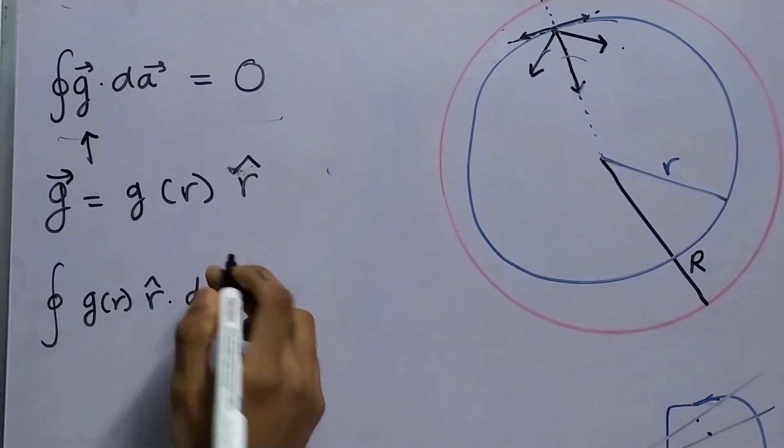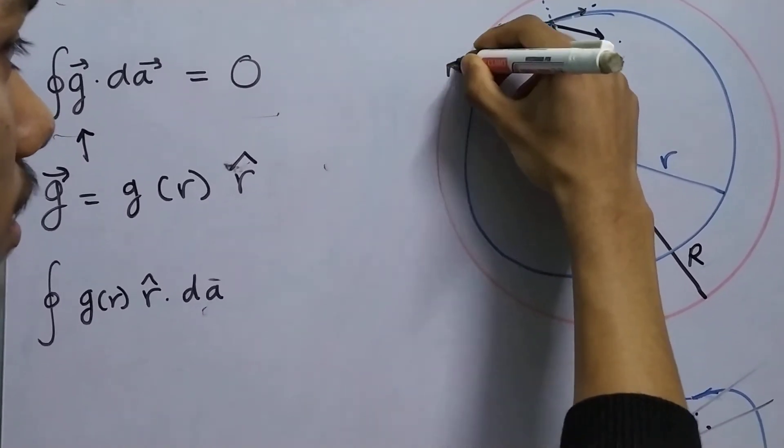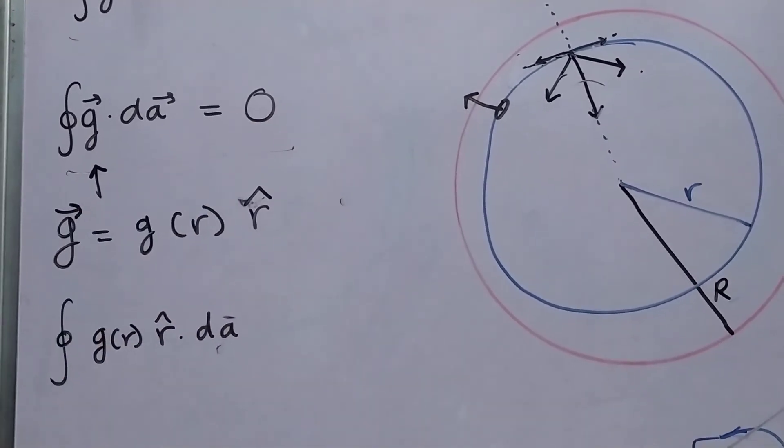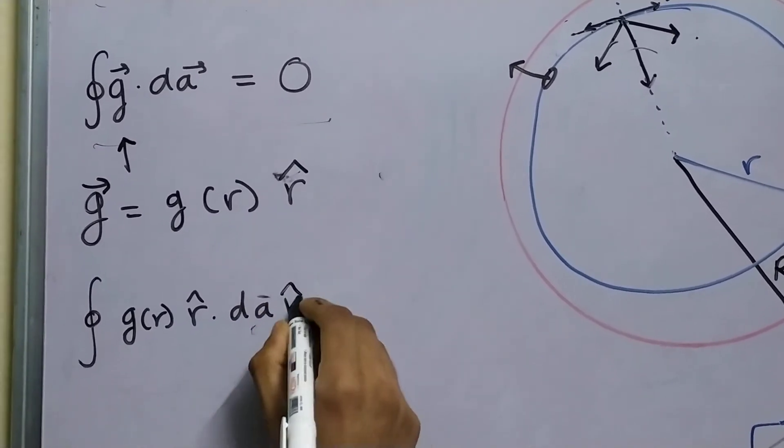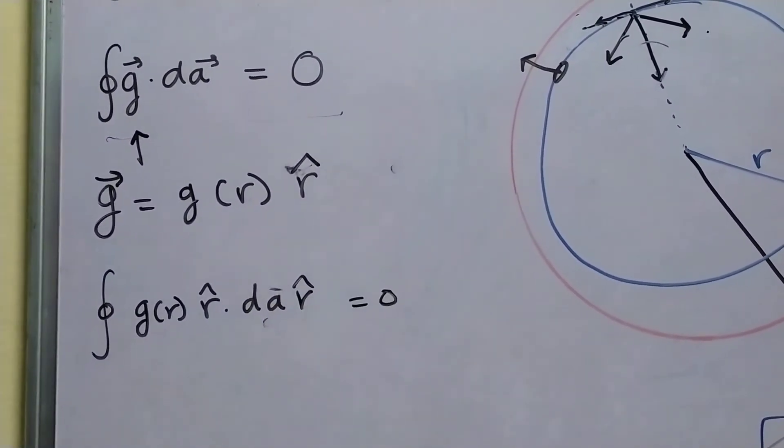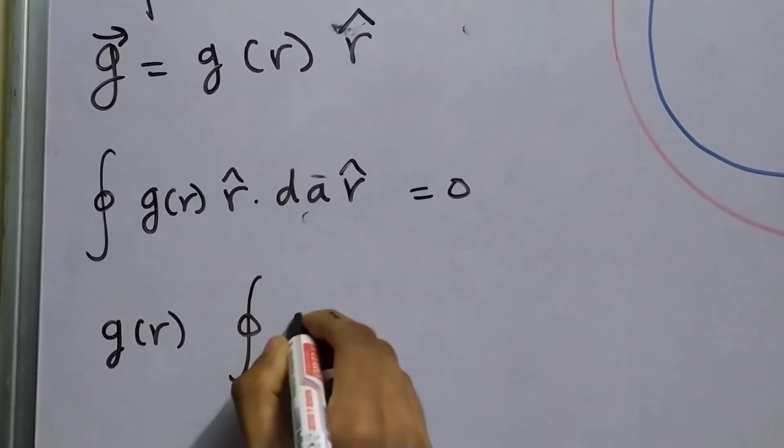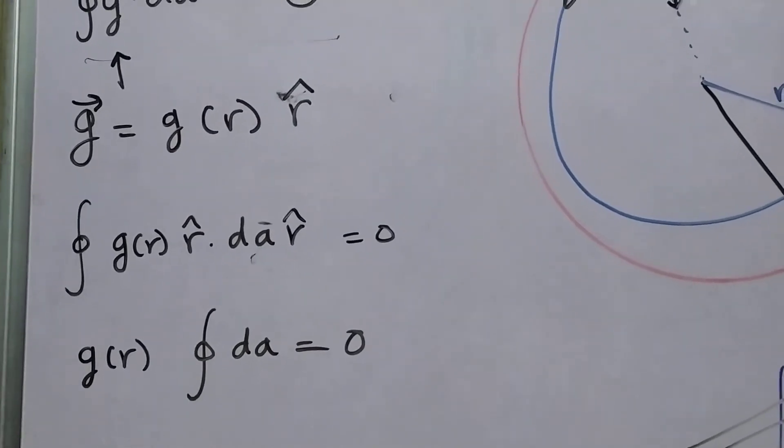dA vector is this small area element and this is your unit vector in dA direction. So, it's again along the positive r cap direction. dA dot r cap which is 0. So, we are left with g of r surface integral dA, surface integral dA equal to zero.